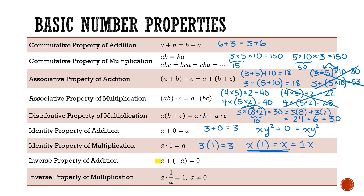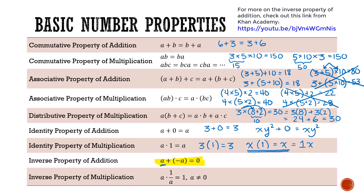Next we have the inverse property of addition. This says that if we have a term and we add its negative value, we're going to end up with 0. For instance, 33 plus negative 33 gives 0. Algebraically, xy plus negative xy would also give 0.